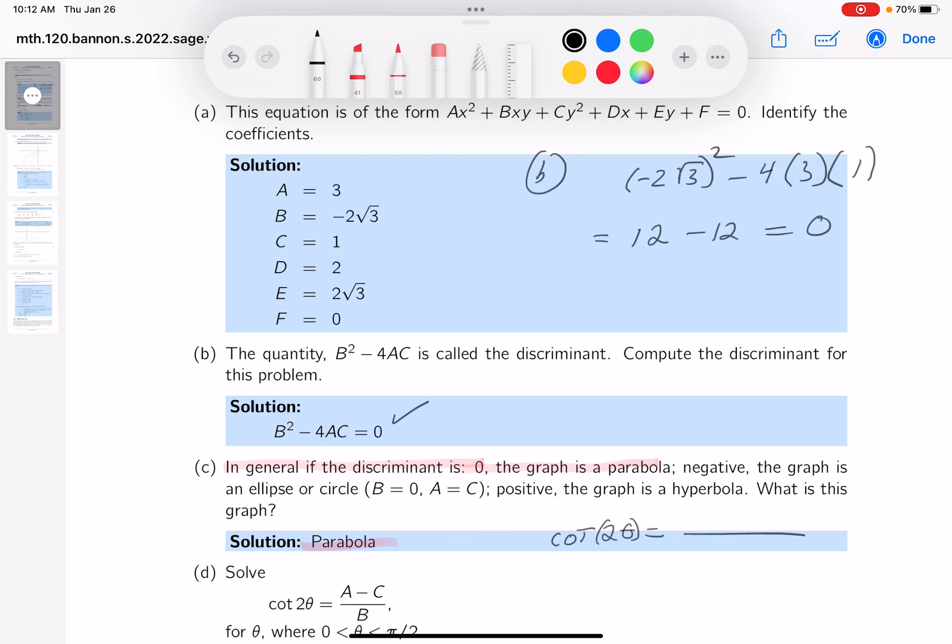So cotangent of twice theta. Let's write this down now. Well, the A is 3, minus the C. The C is 1, over the B. And the B is minus 2, root 3. Now, when they say solve it, they're solving for theta. But before I do that, I want to simplify this. This would be 2. That would be minus 2, root 3.